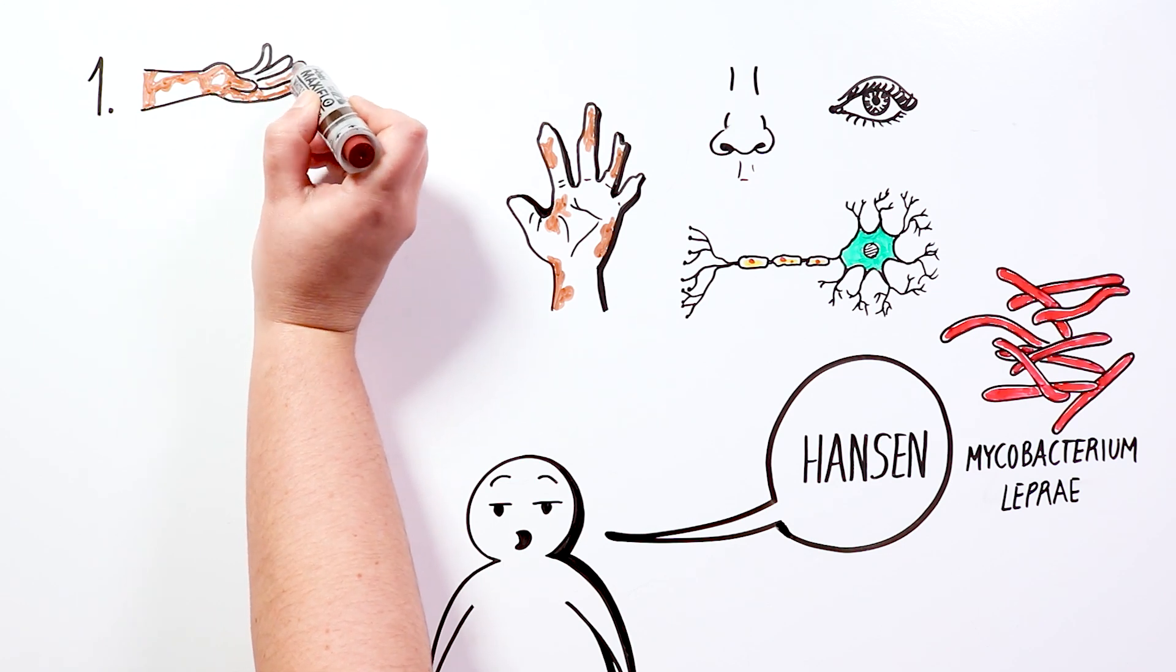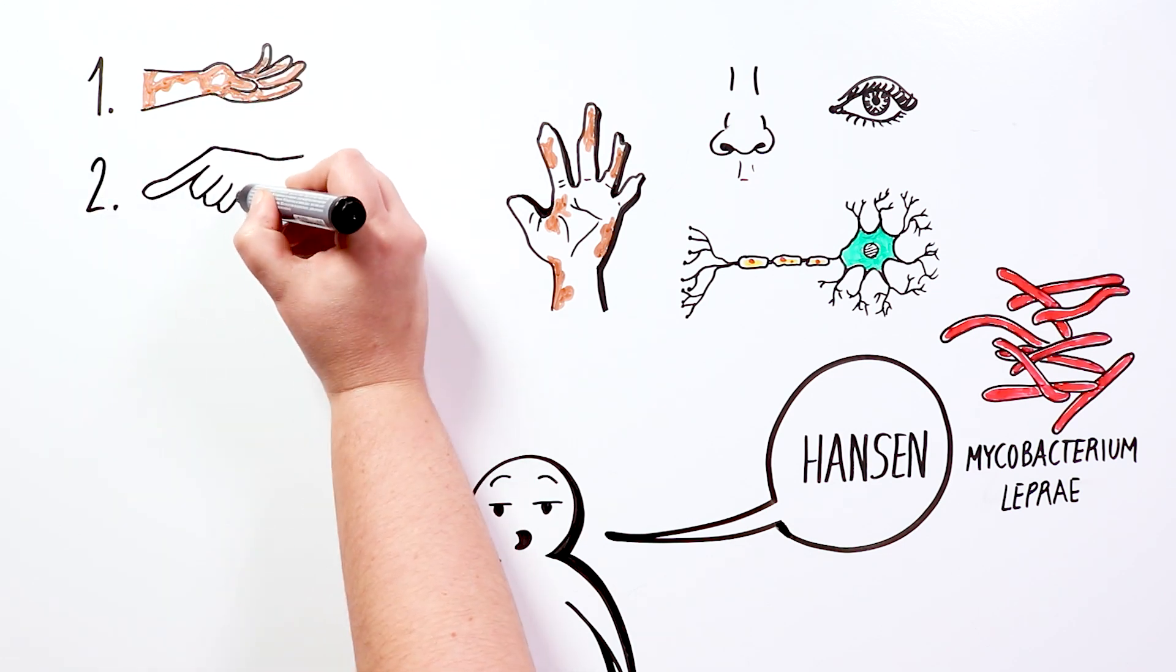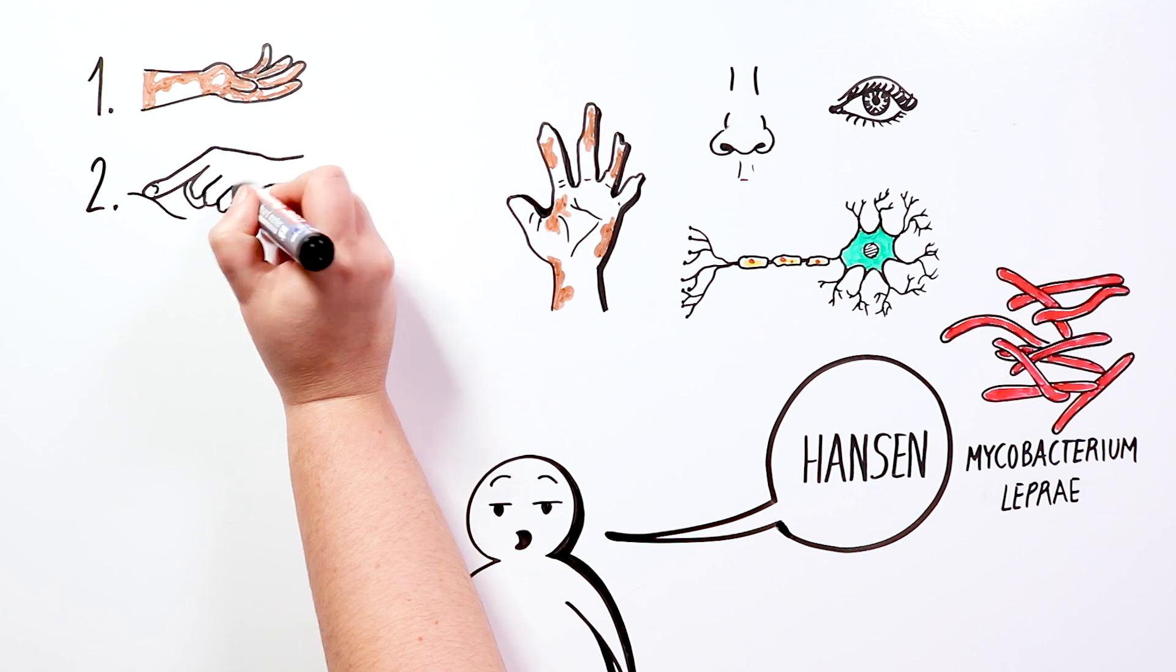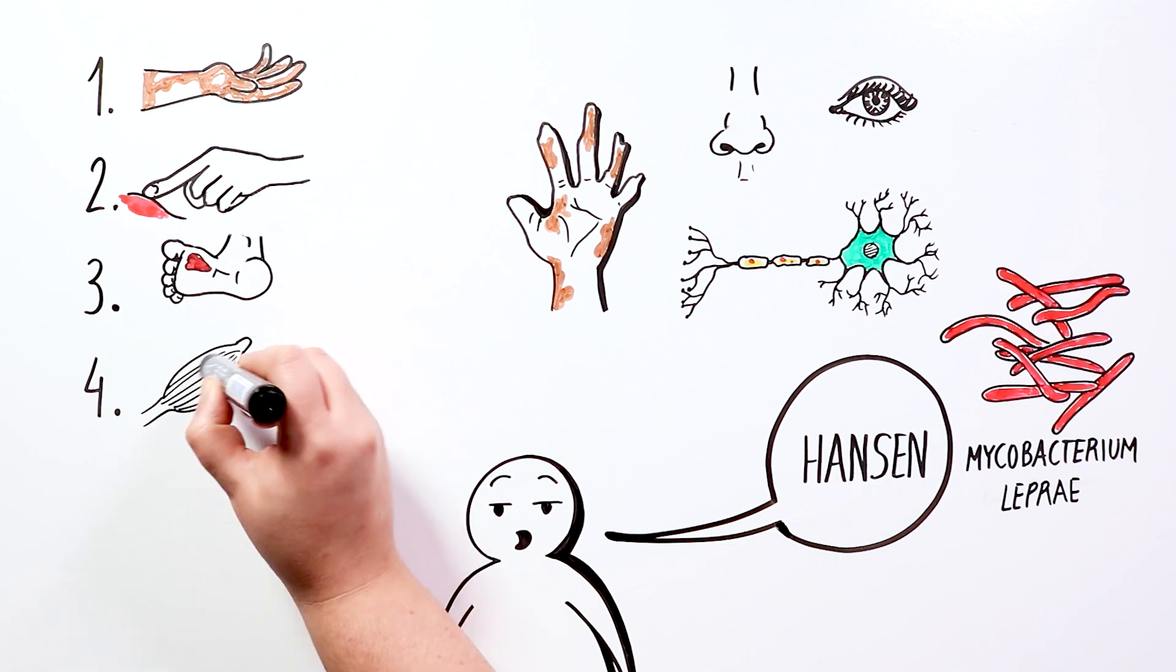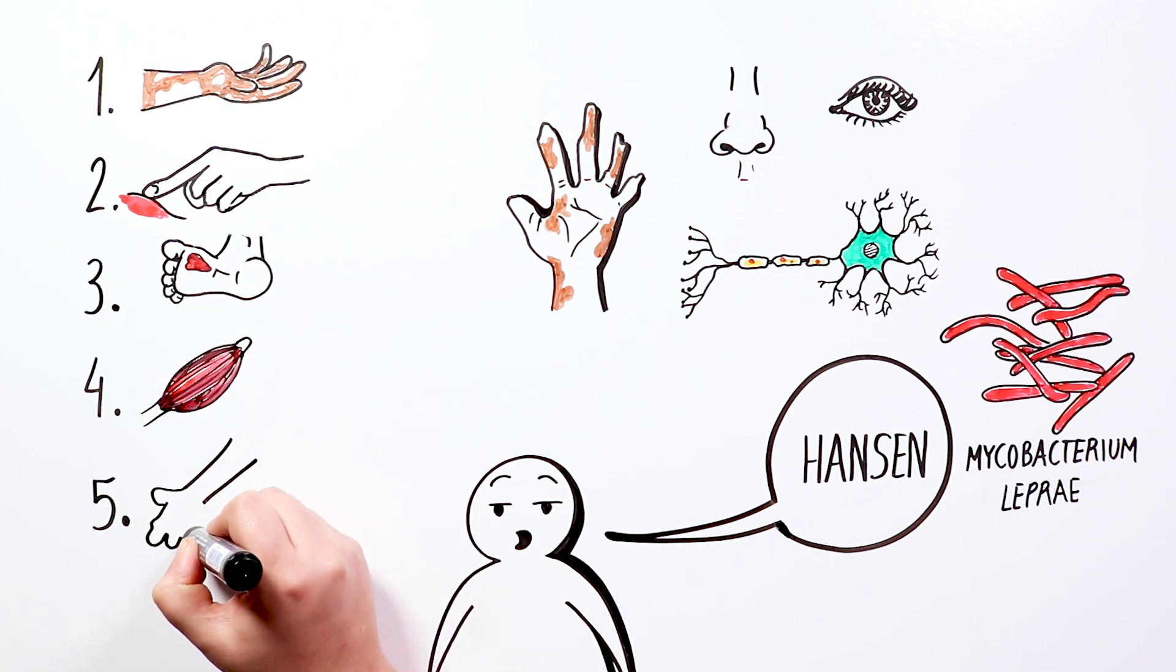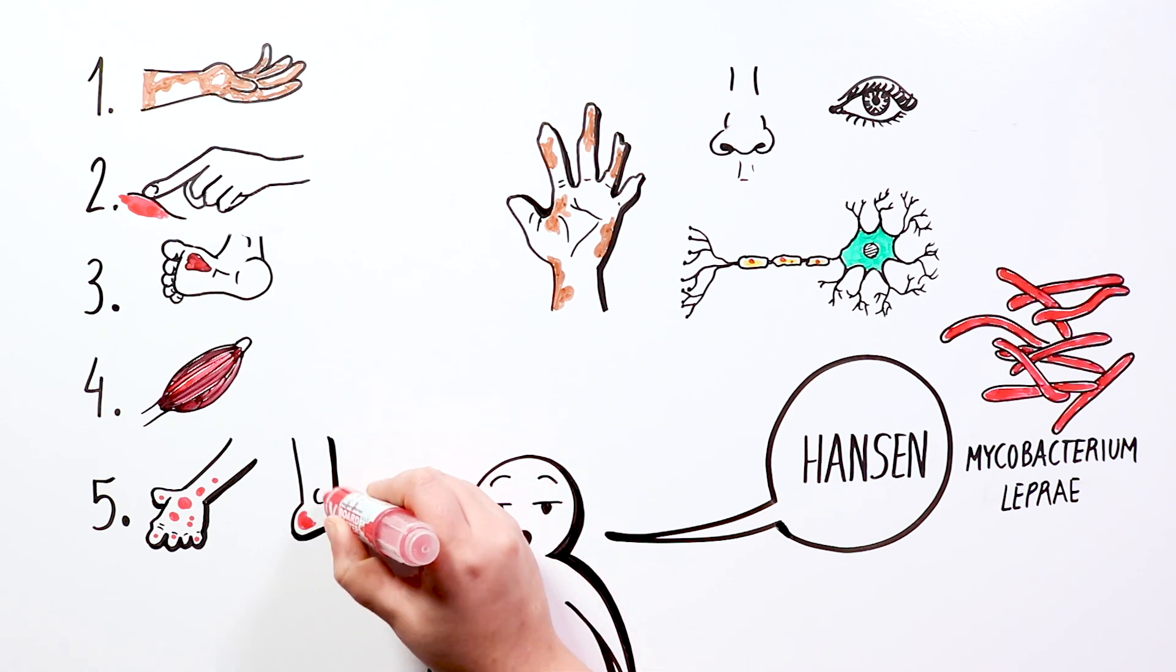The main symptoms are skin lesions, which are lighter than skin color, lesions that present decreased sensitivity to touch, heat, or pain, injuries that don't heal in weeks or months, muscular weakness, and in more serious cases, numbness or lack of feeling in the hands, arms, feet, and legs.